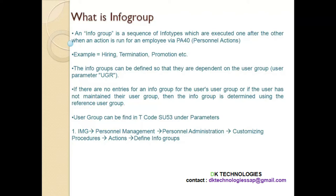Whenever I say personal action like hiring, basically Info Group is the backbone which is driving that personal action. So before we create any action, we have to create an Info Group, because Info Group contains that sequence of Info Types which has to come one after the other. Think of an example: when you hire an employee into the company, you want that employee to be set up in the system. You will enter relevant information like the date of hiring, personal details, address information, bank details, and all that. So you need all those Info Types, and that is the reason why we define an Info Group — which is the sequence of Info Types — so that the user setting up the employee can maintain that information.